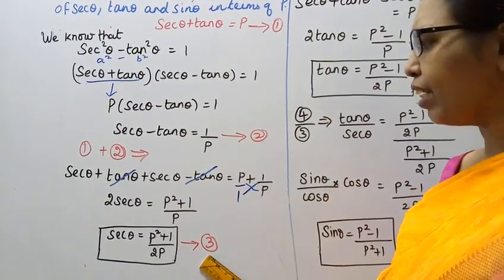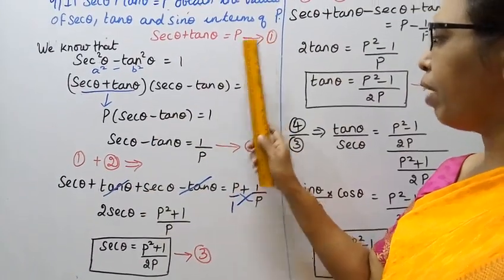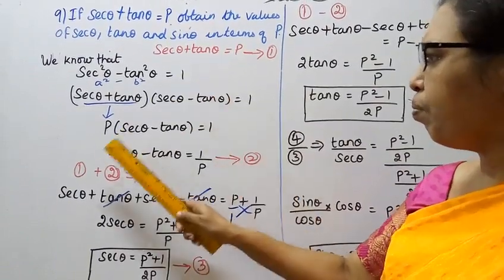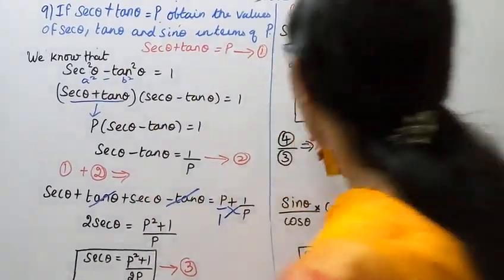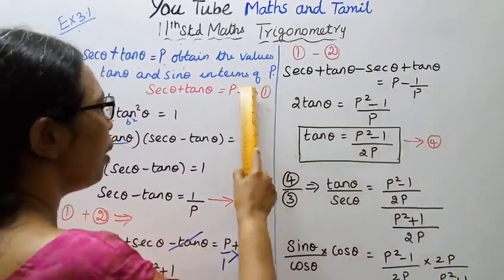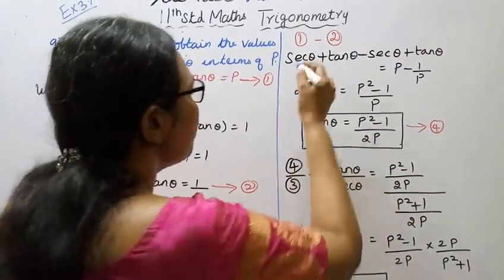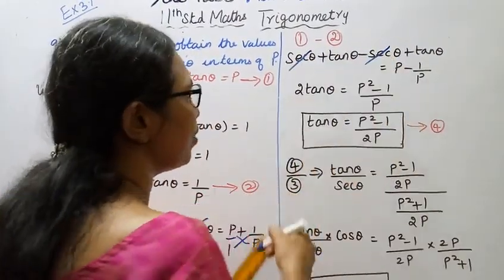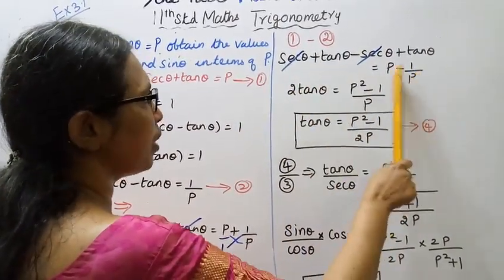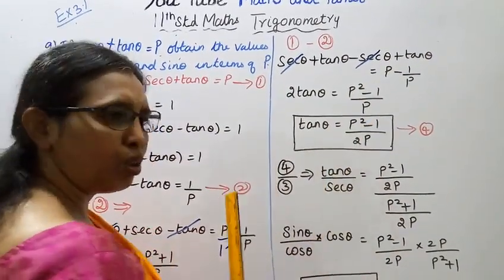Now, sec θ plus tan θ minus (sec θ minus tan θ). Sec θ plus tan θ minus sec θ cancel, leaving tan θ plus tan θ, which is 2 tan θ. This equals p² minus 1 by 2p. Therefore, tan θ equals p² minus 1 by 2p.